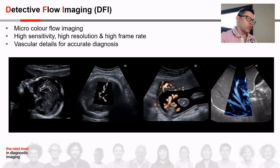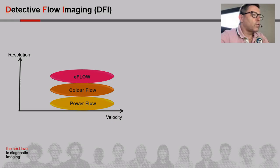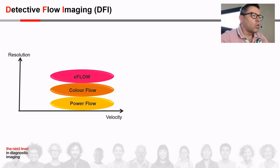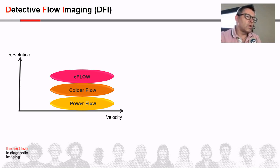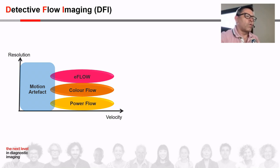Let's see why DFI is more sensitive. In this first graph, you can see the representation of conventional flow, color flow, power flow, and e-flow in relation to resolution. The problem in ultrasound is the interaction between the ultrasound beam and the tissue of the human body, which can sometimes cause artifacts. Even with the color modes, you can have artifacts caused by the movement of structures such as the heart or vascular walls, or by breathing movements.